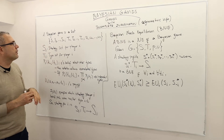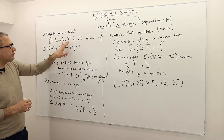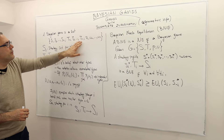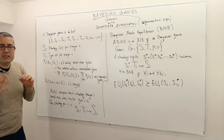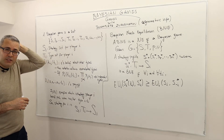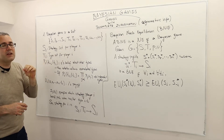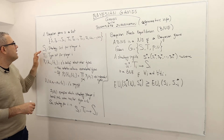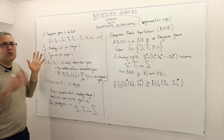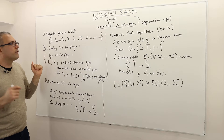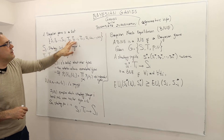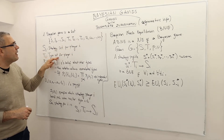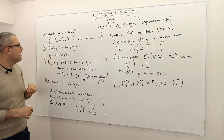These are strategy sets for each player. And then T1, T2, up to Tn. For example, in the second price auction example I previously mentioned, each Si was a zero-to-infinity interval. T1, T2, up to Tn — these are the type sets for each player I.